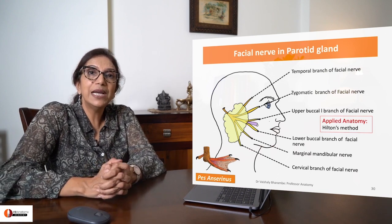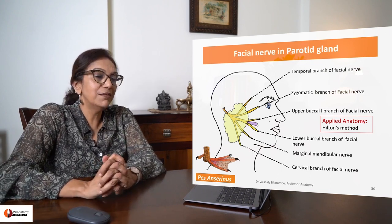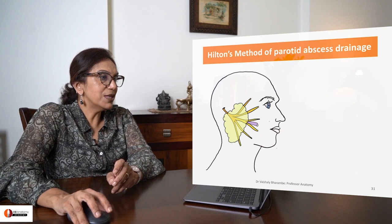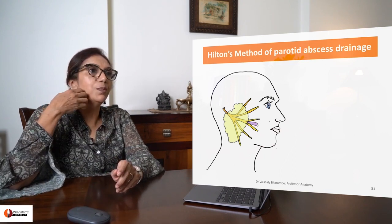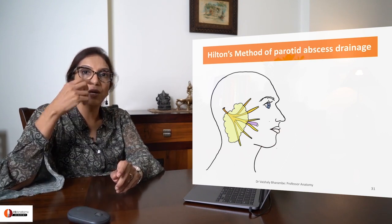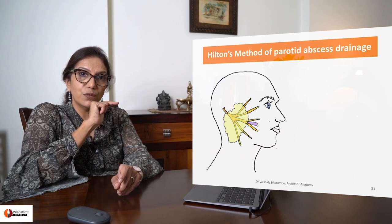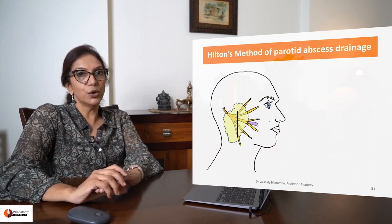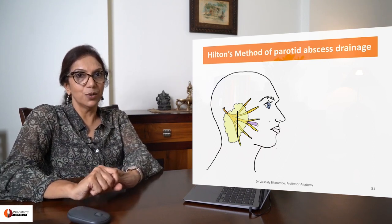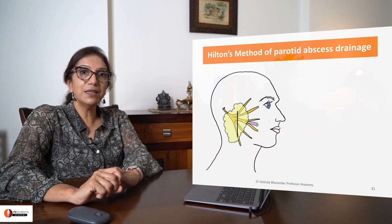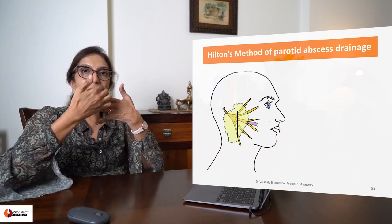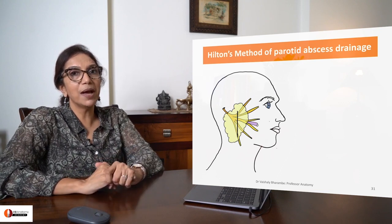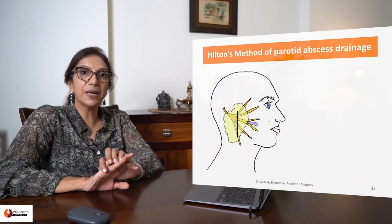Let's talk about something called Hilton's method, which is applied anatomy. Just imagine that you need to operate on parotid gland. Would you make a vertical incision or a horizontal incision? If I make a vertical incision, all the branches of my facial nerve get cut — the patient comes back with facial paralysis.